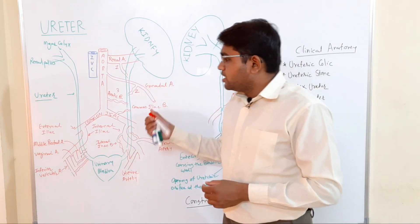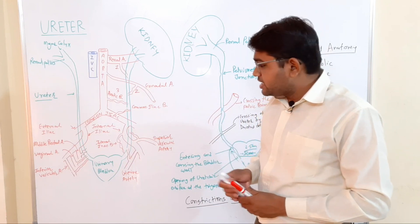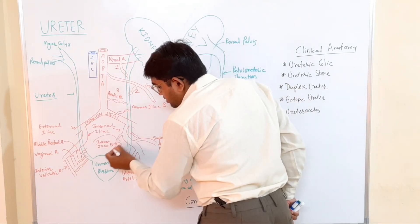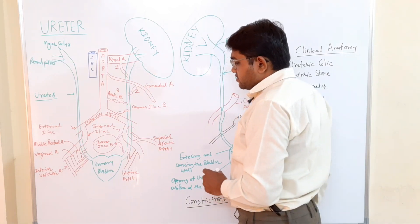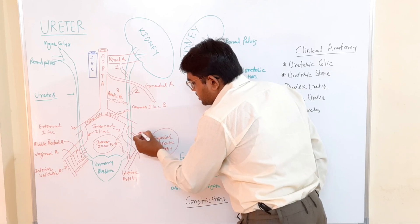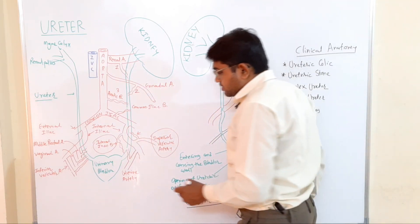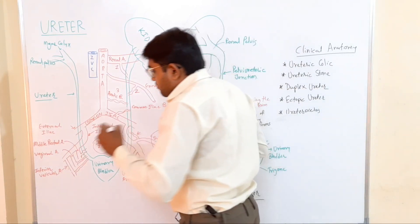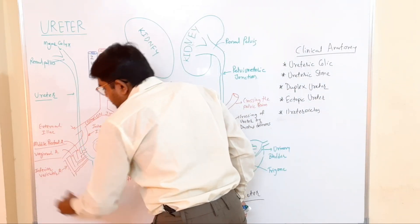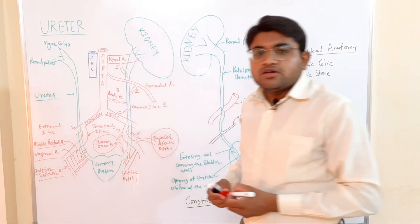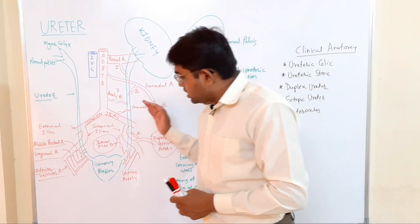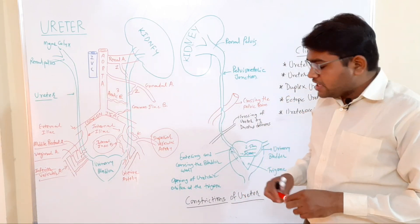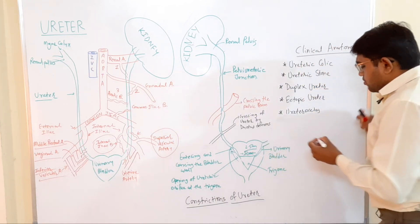For the pelvic part of the ureter, supply comes from: a direct branch from the internal iliac artery, the superior vesical artery, the uterine artery, the middle rectal artery, the vaginal artery, and the inferior vesical artery. All these arterial branches supply the pelvic part of the ureter.